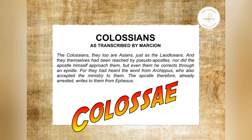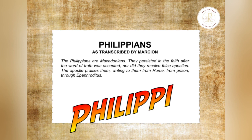Next up are the Colossians. And finally, we wrap it up with Philippians. Quote: 'The Philippians are Macedonians. They persisted in the faith after the word of truth was accepted, nor did they receive false apostles. The apostle praises them, writing to them from Rome, from prison, through Epaphroditus.' Unquote.